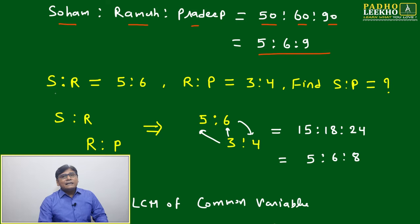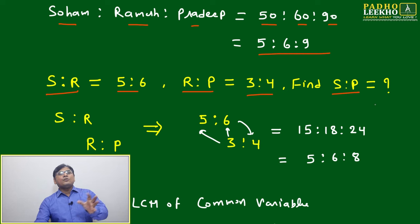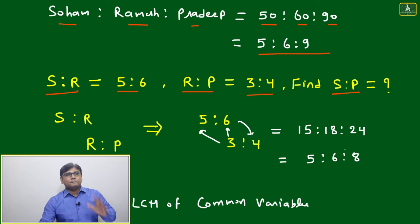Now if data is not given directly in absolute numbers and it is given in ratio of pairs, then how to find the ratio among all three variables? Like Soham and Ramesh it is given 5:6, Ramesh and Pradeep it is given 3:4. Find S:R:P.